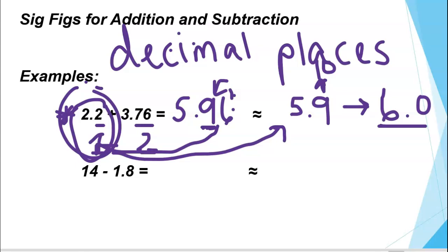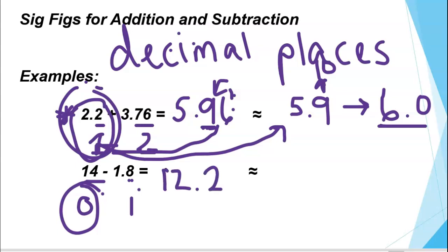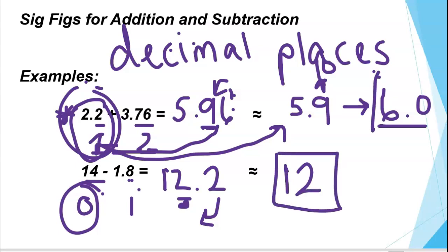Looking at the next example: 14 minus 1.8. Remember, this is subtraction, so we are not looking at sig figs — we are looking at decimal places. 14 has zero decimal places; 1.8 has one decimal place. Zero is less than one, so we're going to have zero decimal places in our final answer. 14 minus 1.8 gives us 12.2, but I still have a decimal place, so I need to round to no decimal places. Since the digit is 2, that rounds down to 12. So our final answer is 12.